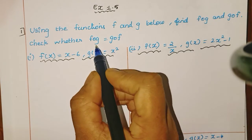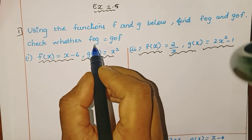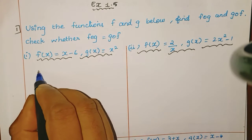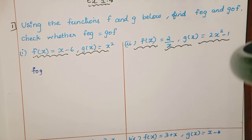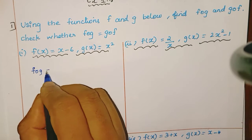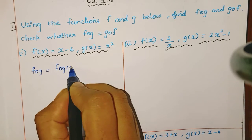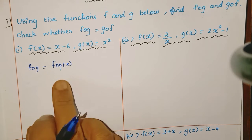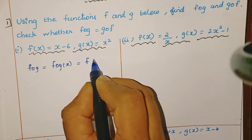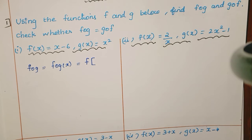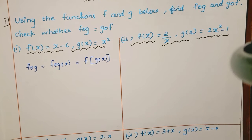First, we are going to find f composition g. So f composition g — what does it mean? We are going to give one input, that is x. f composition g of x means f of [g of x]. The operation means g of x is given as input to the f function.